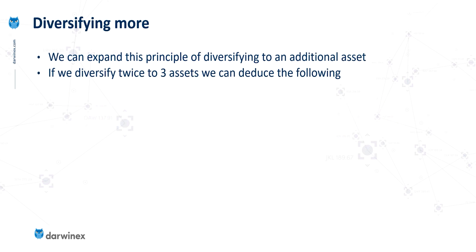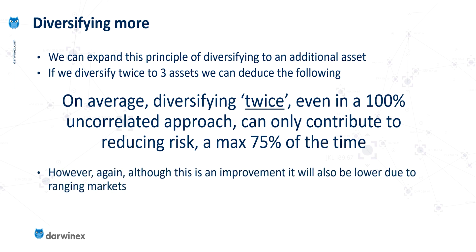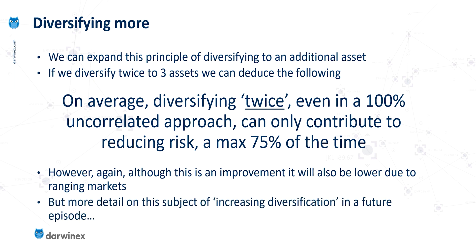One potential option is to diversify more — for example, instead of trading two assets, trade three. If you diversify to three completely uncorrelated assets, this can now only contribute to reducing risk a maximum of 75% of the time. That figure is a maximum, and in reality it would be less because of flat markets. In a future episode I'll look at the effects of increasing the portfolio size, where the calculations behind these percentages will be covered in a lot more detail.